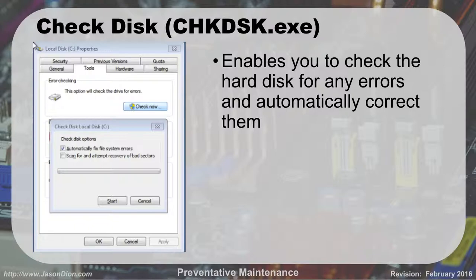Check Disk. It's going to enable you to check your hard disk for any errors on the physical platter and automatically correct them, marking those sectors as bad so it won't use them in the future. You can do this by right-clicking on your drive, going to Properties, clicking on Tools, and starting your check disk via the error checking option at the top. Or there is a text-based version inside the command prompt using CHKDSK.